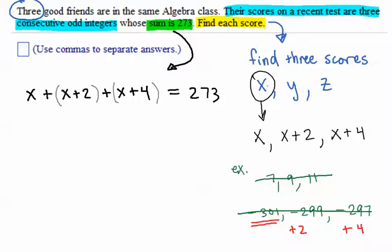And I'm going to put that into an equation that is set equal to the sum 273 and solve. That will help me find out the first score, and then I still have to come back and find out the other two scores. So, solve. I get 3x plus 6 equals 273.